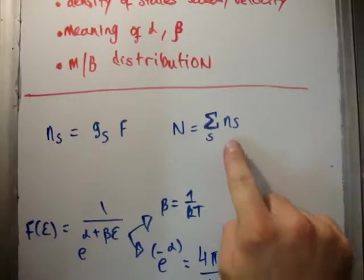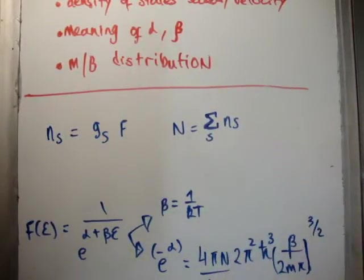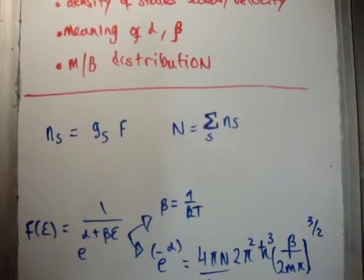In order to calculate the total number of particles, we then need to sum all of these n sub s's. The problem is, of course, that it is a sum, and sums are difficult to perform. So, because the numbers are quite large, we are able to generalize this, or make an assumption that we are able to go from a sum to an integral.